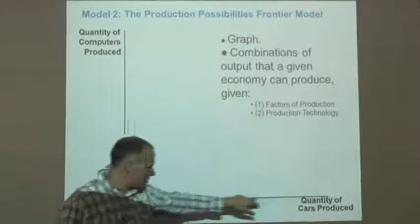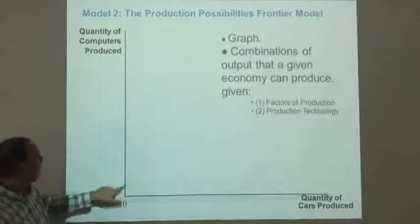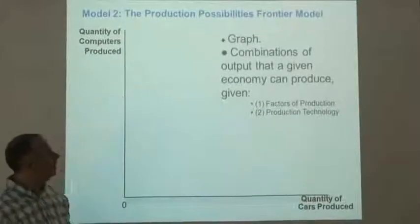As we increase the number of cars, we move along the horizontal axis. As we increase the number of computers, we move along the vertical axis.